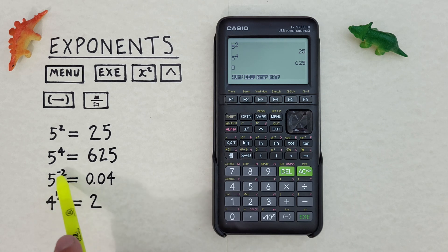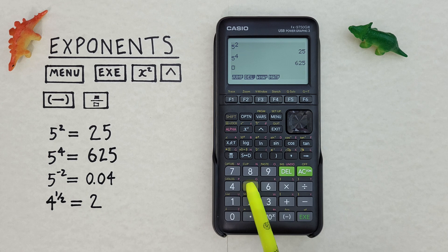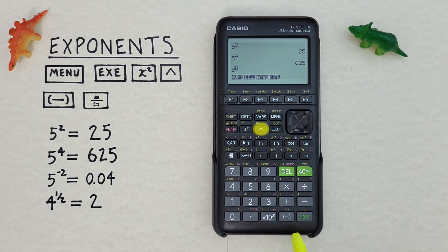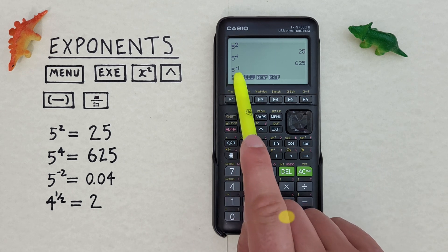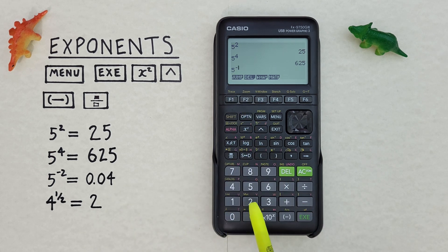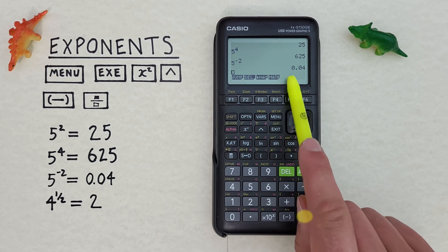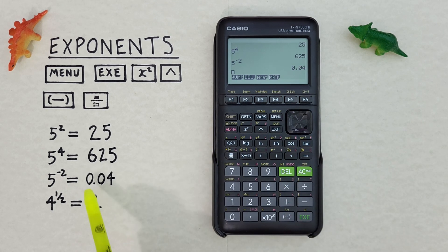What if we have a negative exponent? Well, to do that we can again use the caret key. So we have 5 to the power of negative 2. We start with the 5, and then the up arrow or caret key. And then we want to use the negative key down here. Not the subtraction key, this negative one in brackets. We press that to get our negative sign, and then 2, and press exe, and we get 0.04, which is correct.